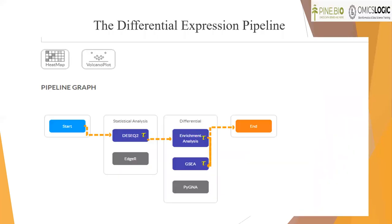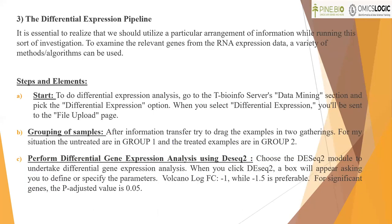The third pipeline is the Differential Expression Pipeline. It is essential to use a particular arrangement of data when running this type of analysis. To examine the relevant genes from the RNA expression data, a variety of methods or algorithms can be used. To start, go to the T-BioInfo server's Data Mining section and pick the Differential Expression option. After uploading the file, drag the samples into two groups. In this case, untreated samples are in group 1 and treated samples are in group 2.